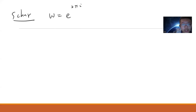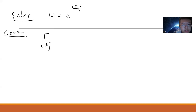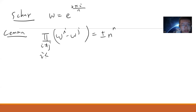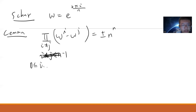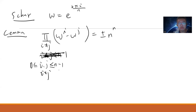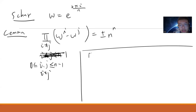Let ω = e^(2πi/n). There is a lemma. The first lemma is very simple: consider all i different from j, and ω^i minus ω^j will be plus or minus n^n. Consider all i and j from 0 to n minus 1, all different — the product will be ±n^n.